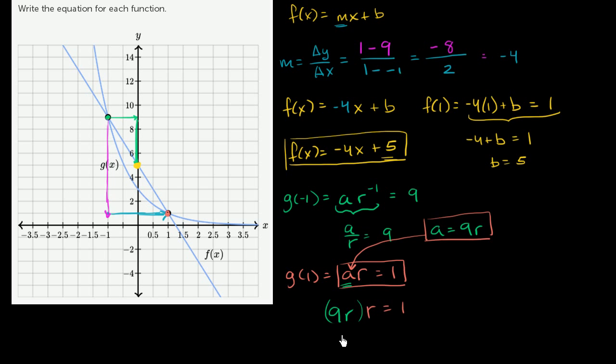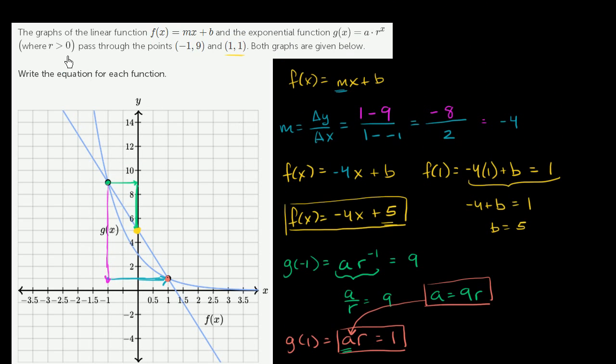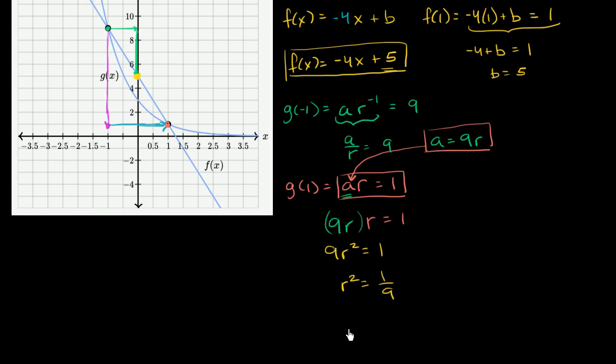We could write 9r² = 1. Divide both sides by 9, r² = 1/9. To figure out r, they tell us r is greater than 0, so we take the principal root and we get r = 1/3. We could substitute this back: a = 9 times r, so 9 times 1/3, a = 3. So our exponential function is g(x) = 3 times (1/3)^x.